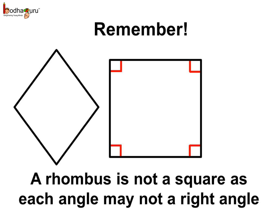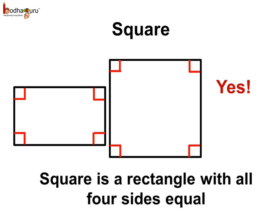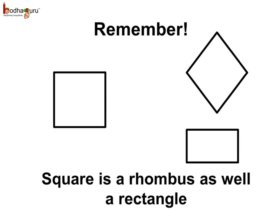But remember, children, the opposite is not true. A rhombus is not a square as each angle may not be a right angle in a rhombus. Another thing to ponder: is a square a rectangle? In a rectangle, the opposite sides are of equal length and all the angles are right angles. In a square too, all the angles are right angles, and not just the opposite sides, but all the sides are of equal length. Hence, a square is a rectangle with four sides equal. So, a square is a rhombus due to its equal sides and it is a rectangle due to all angles being right angles. Hence, all its sides are parallel and equal.